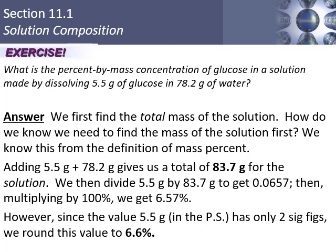When we divide 5.5 by 83.7 we get 0.0657. To convert to a percentage, move the decimal two places or multiply by 100, giving 6.57%, which rounds to 6.6%.